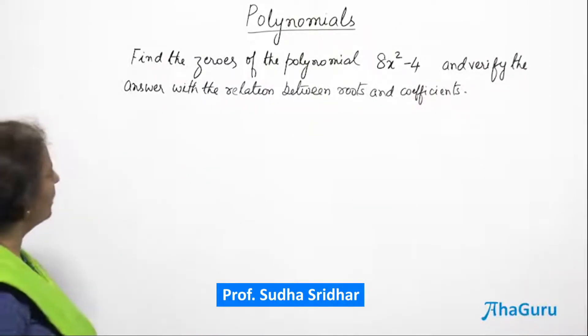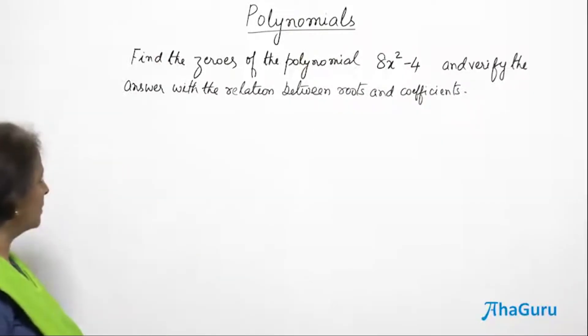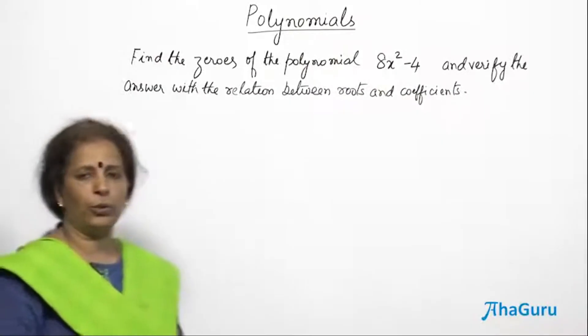Let us do this question. Find the zeros of the polynomial 8x² - 4 and verify the answer with the relationship between roots and coefficients.